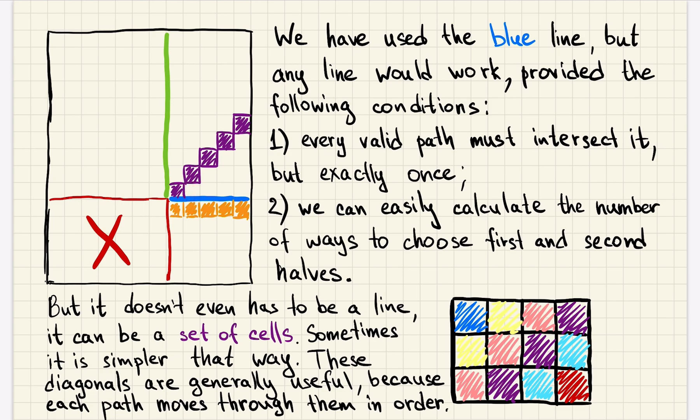So, for example, if we would chosen like some horizontal line, it's still true that each path will intersect it exactly once, but it's not very helpful because for the lower half, we can still go to the forbidden zone and well, we need to calculate the number of valid ways to choose the second half. And that sounds exactly like the problem we were trying to solve. So that reduction is not helpful.